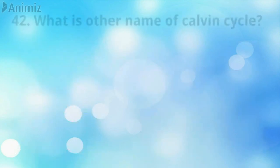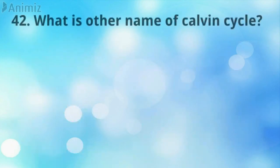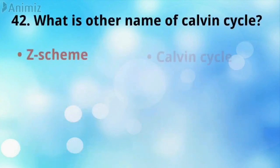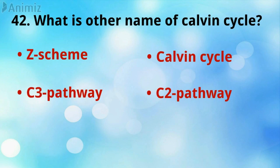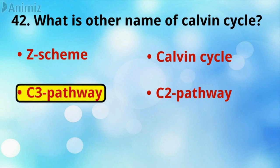What is the other name of the Calvin cycle? C3 pathway is the correct answer.